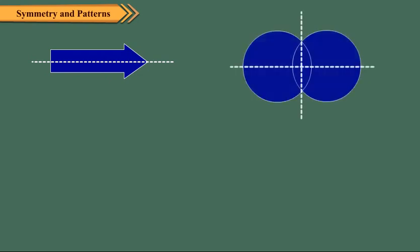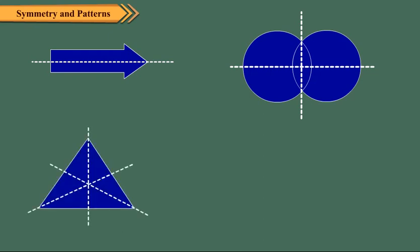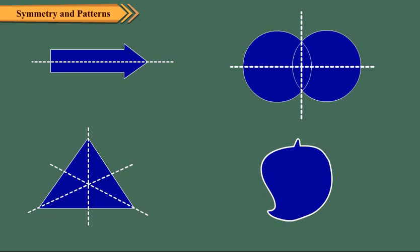This design has only one line of symmetry. This shape has two lines of symmetry. This shape has three lines of symmetry. This shape has no line of symmetry.